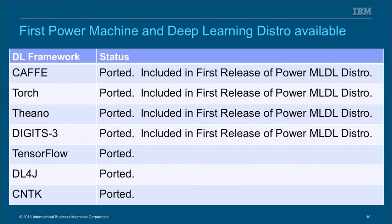In terms of what is supported today and coming in a release very soon: the Deep Learning Framework Caffe has already been ported and is included in the first release of the Power ML/DL distribution. Torch has also been ported and will be in the first release. Theano and the Digits 3 interface — NVIDIA's graphical interface supporting various workflows — will also be supported on Power in the OpenPower ecosystem. TensorFlow, DL4J, and CNTK have been ported and will be supported in upcoming releases.